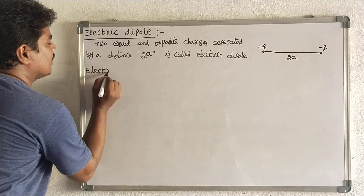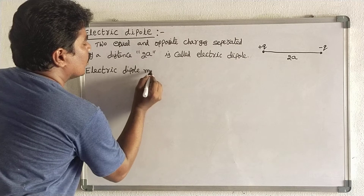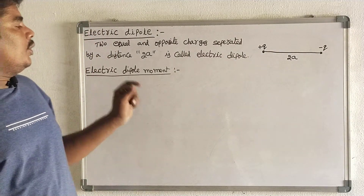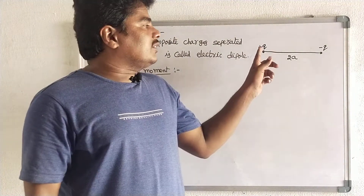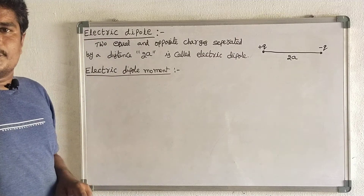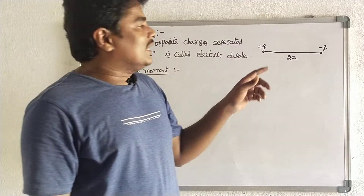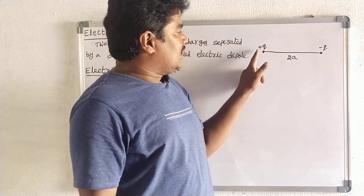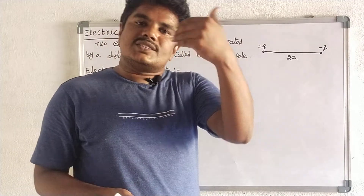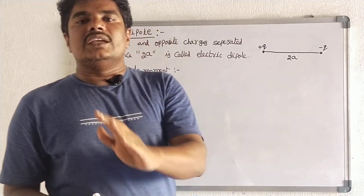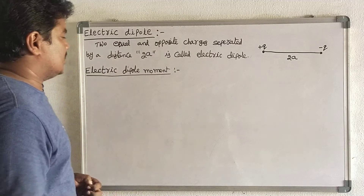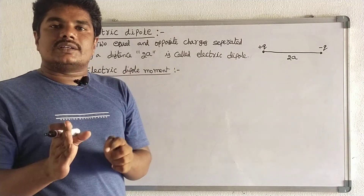Electric dipole moment means the product of the magnitude of either charge and the distance between them is called electric dipole moment. Magnitude of either charge means we can take any charge — this one or this one. But magnitude means we do not consider the sign. If there is a minus sign, we simply neglect that minus sign and take only its magnitude.